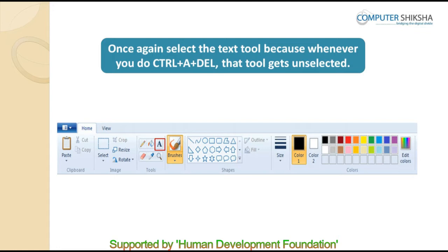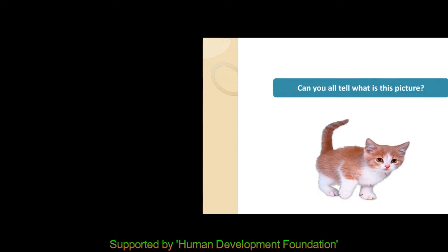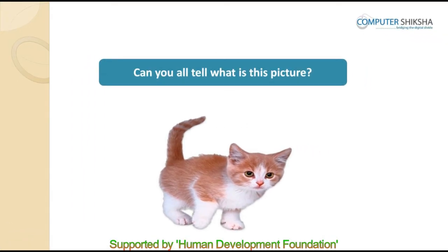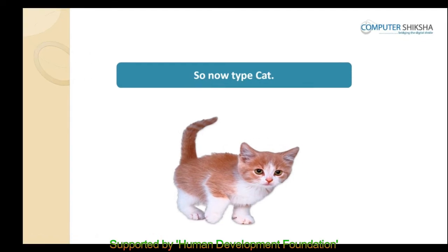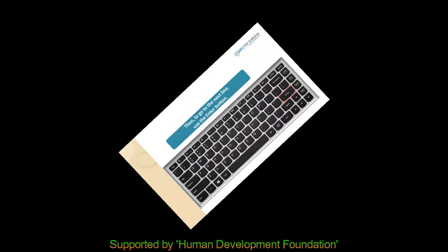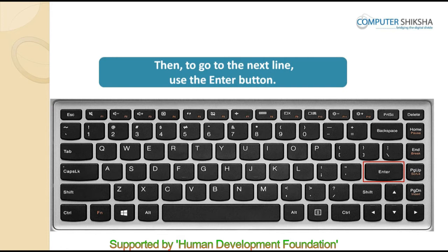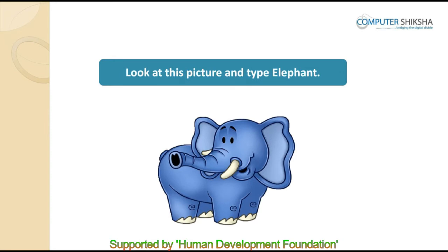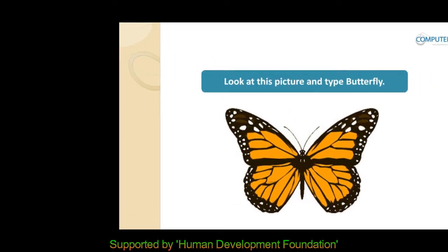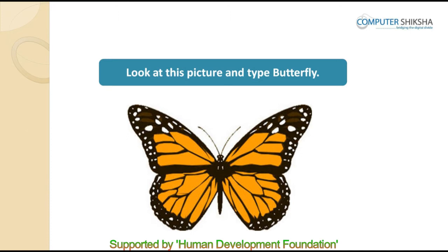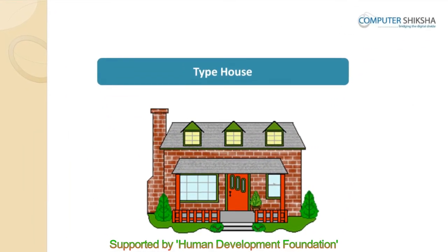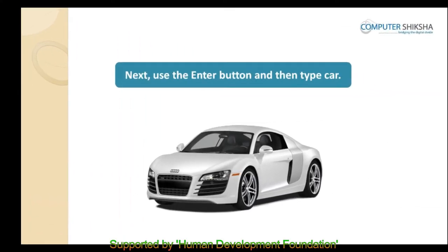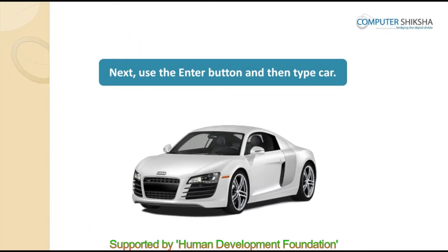After having selected the text tool, click on your sheet. Can you tell what this picture is? Yes, it is a cat. So now type CAT, then to go to the next line use the enter button. Look at the next picture and type ELEPHANT. Next, everyone type BUTTERFLY, and then type HOME. Use the enter button and then type CAR.